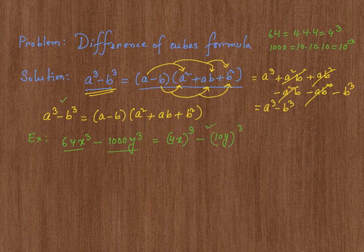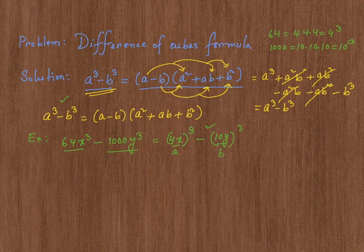Now, this exactly looks like difference of cubes. In my context, a is 4x and b is 10y. Now, my formula says it has to be a minus b, that means 4x minus 10y.